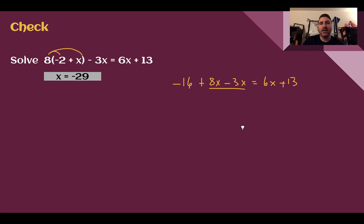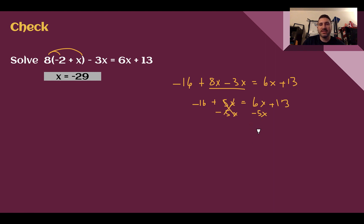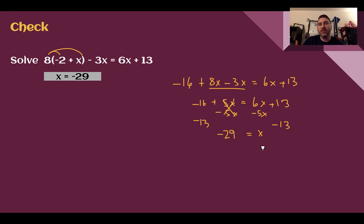Let's combine like terms — I see 8x and minus 3x are both x terms. So 8x minus 3x is 5x. If I subtract 5x from both sides, the left side goes to 0, and 6x minus 5x is just 1x — so I'm already left with positive x by itself. I just need to undo the constant on the right, subtracting 13. Negative 16 minus 13 ends up being negative 29 equals x — or switching it around, x equals negative 29.